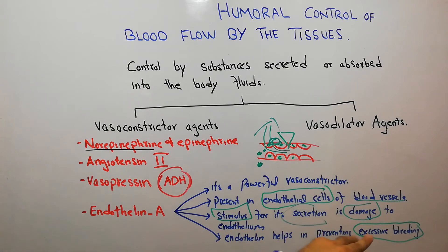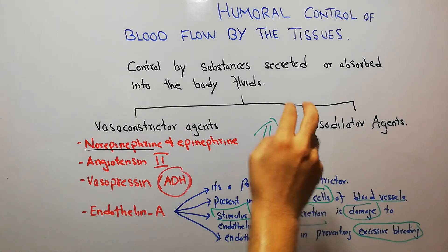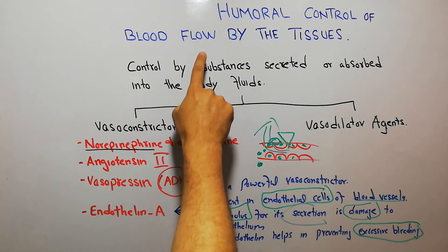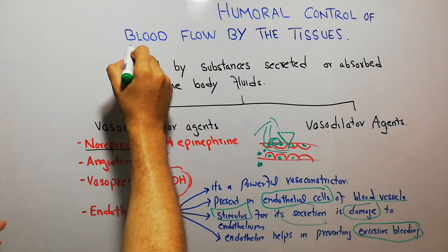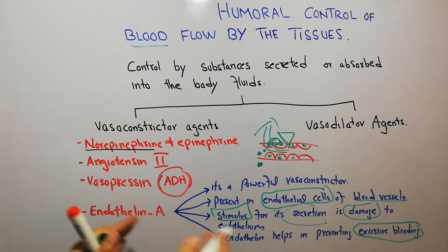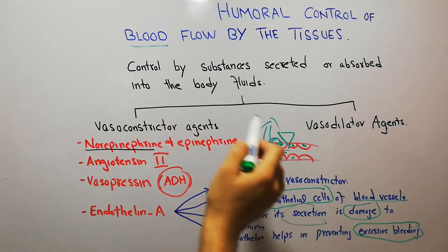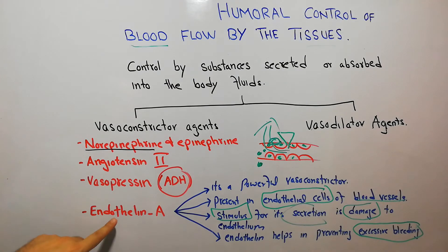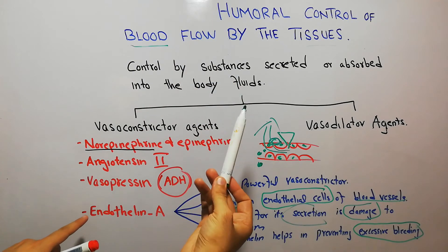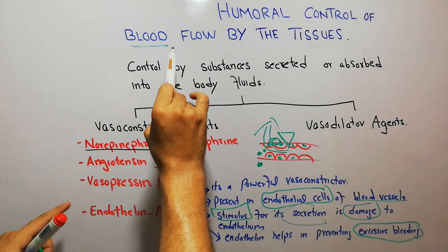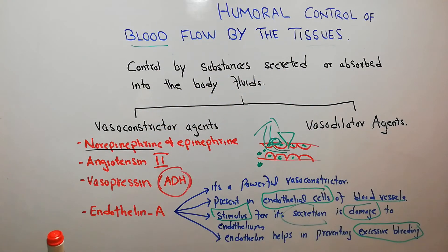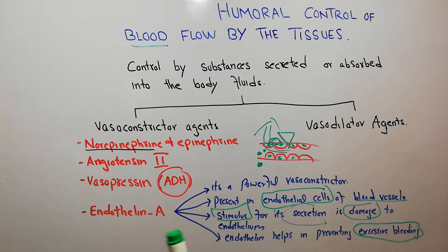When endothelin prevents bleeding from a blood vessel, it helps restore blood flow to the tissue. If it were not secreted and the bleeding were not controlled, blood would not reach the tissue. So endothelin A is also playing its role in the humoral control of blood flow by the tissues, and this is one way in which blood flow to the tissues is restored.